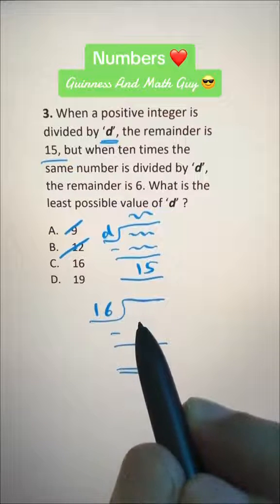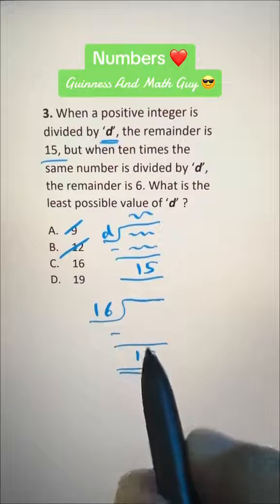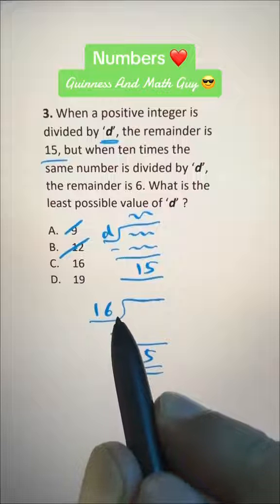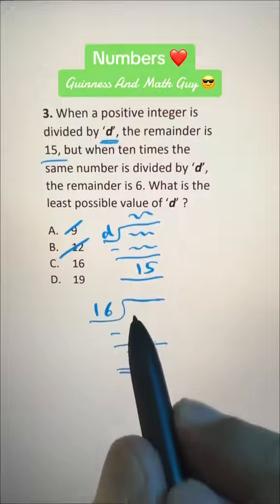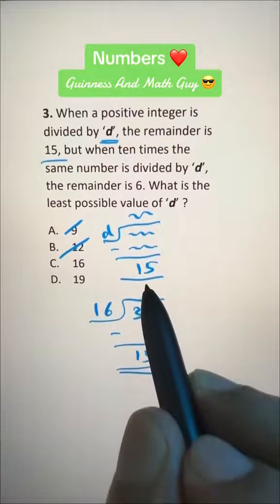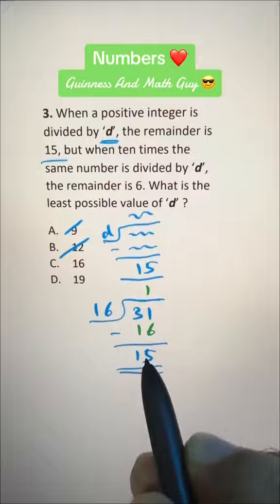16 plus 15 is 31. So let's divide 31 by 16. We get 16 times 1 is 16, and then 31 minus 16 is 15.